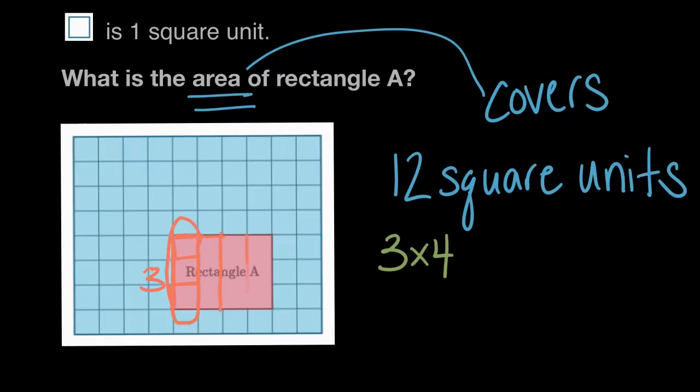How many of these columns like this will there be? There will be one, two, three, four. Because our length here at the top is four. So this time, four times, we will see three square units. One, two, three. And we'll see that one, two, three, four times.